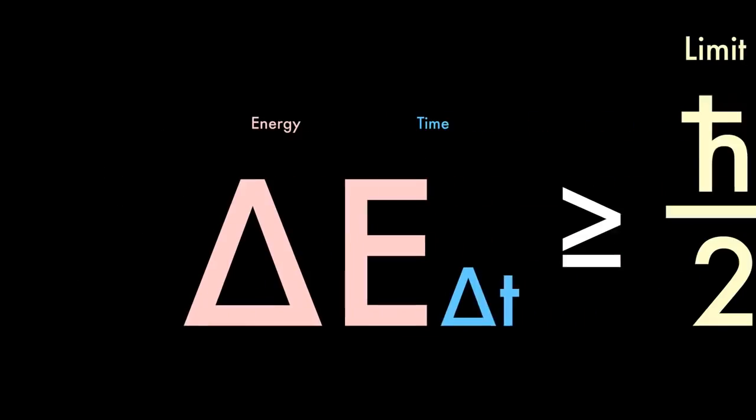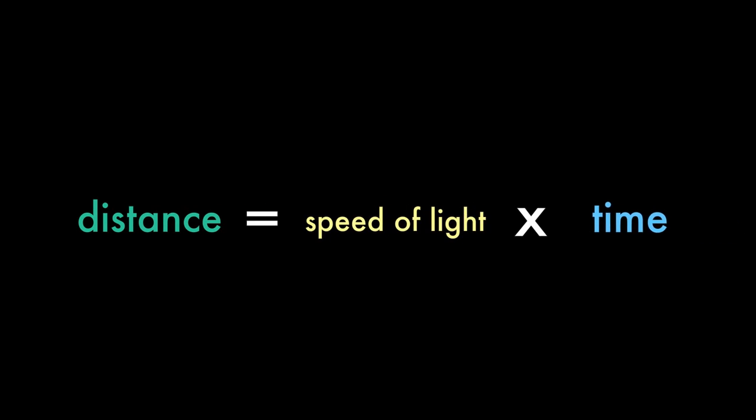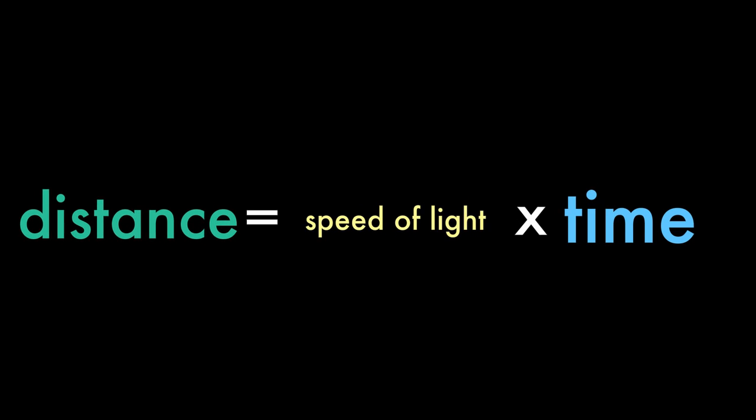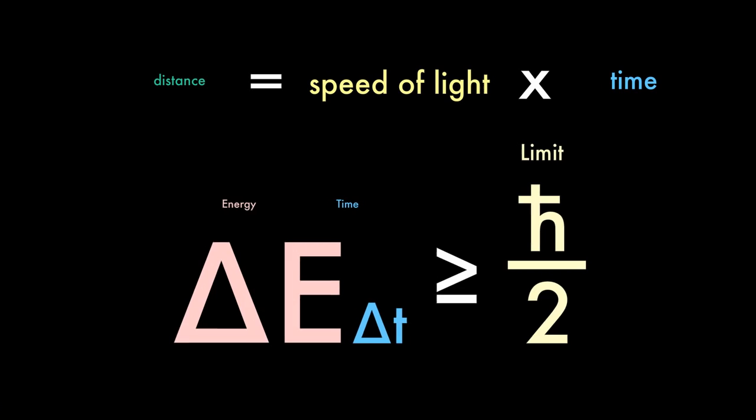How can virtual photons carry different amounts of force over distance, like the gravitational force does? The more energy within a virtual photon, the less time it can exist, due to the Uncertainty Principle. Since virtual photons travel at the speed of light, the time traveling the speed of light will determine its distance. Therefore, the more energy within a virtual photon, the less distance it can travel.